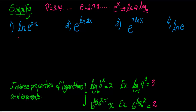Let's look at the first example. Simplify — that means make it smaller. A student asked me what's the difference between simplifying and solving. When you simplify, you take an expression and make it less complex, you make it simpler. When you're solving, you find the value of X. So when we're simplifying, we're not interested in finding the value of X; we're just interested in making the expression simpler.